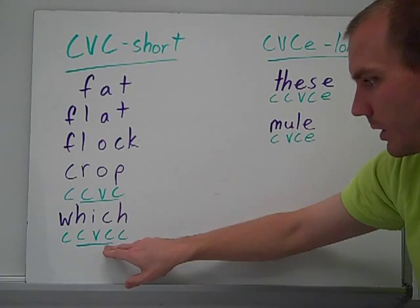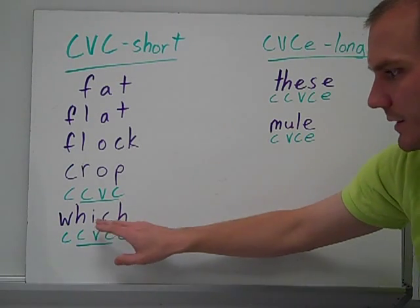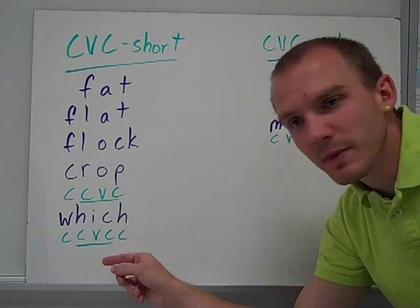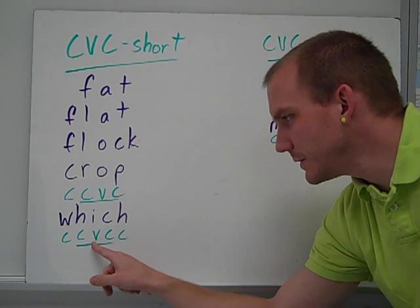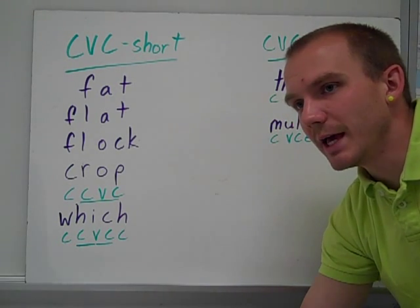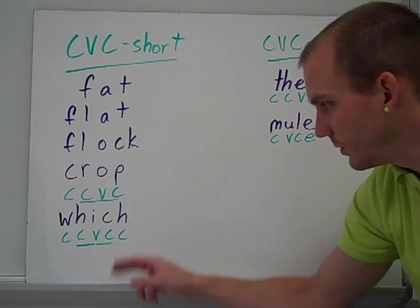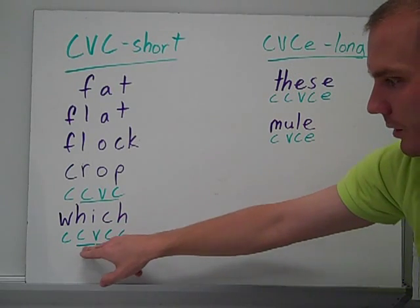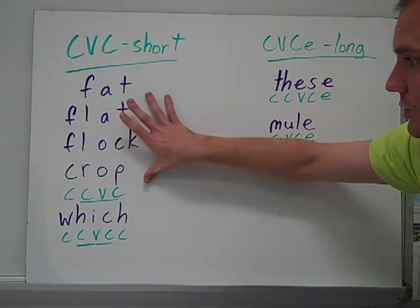Witch, consonant, consonant, vowel, consonant, consonant. So there's a lot of consonants, but we just focus on where the vowel is. And we look on both sides, and you have consonant, vowel, consonant, which. So you hear that short I sound in the middle, because you're CVC. These will be short.